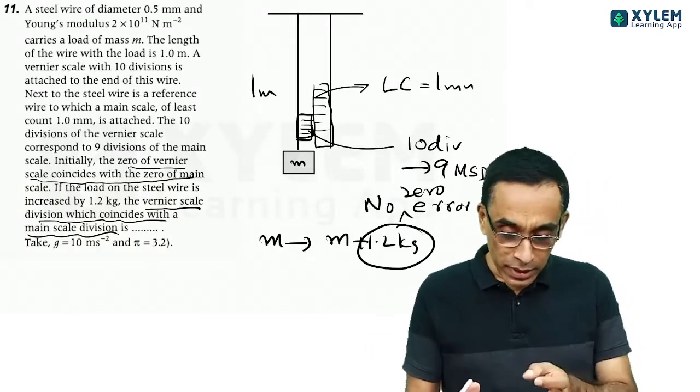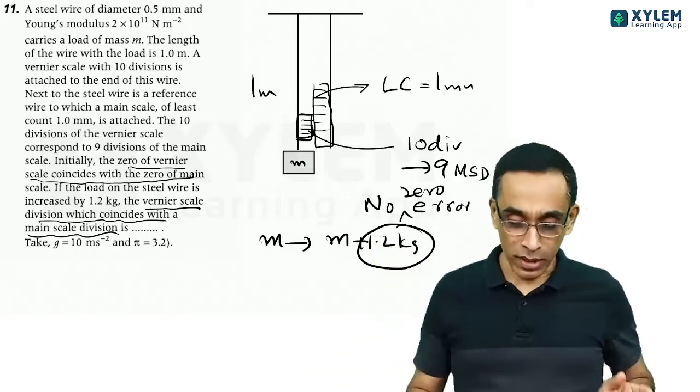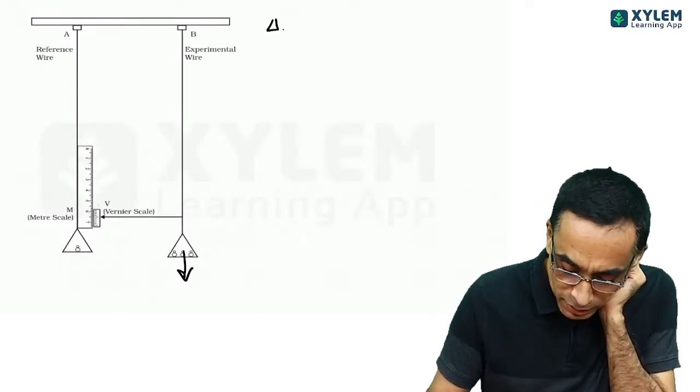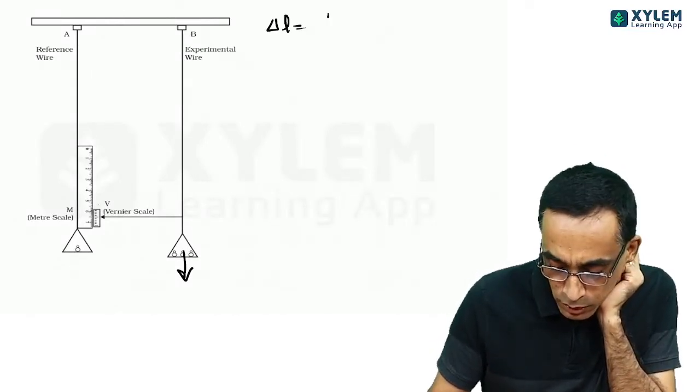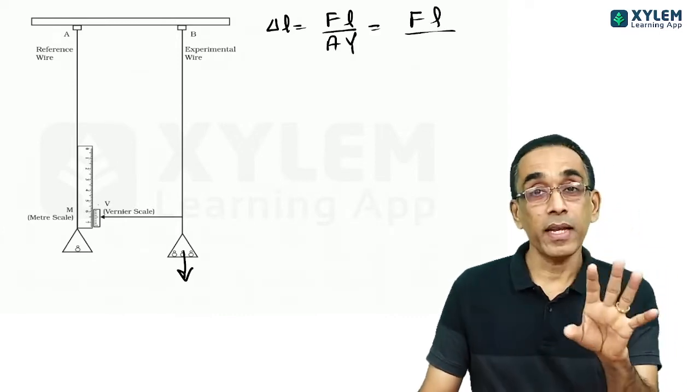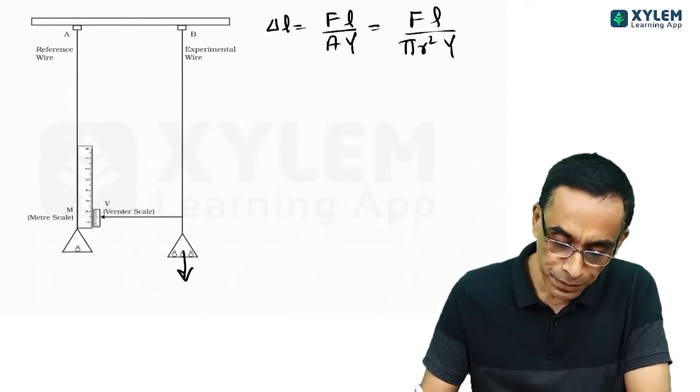This is directly from your NCERT textbook, not just a question but a concept. This diagram is from the NCERT textbook. The reference wire will be the main scale, experimental wire will be vernier. Then, when the experimental wire weight increases, there will be a reading.